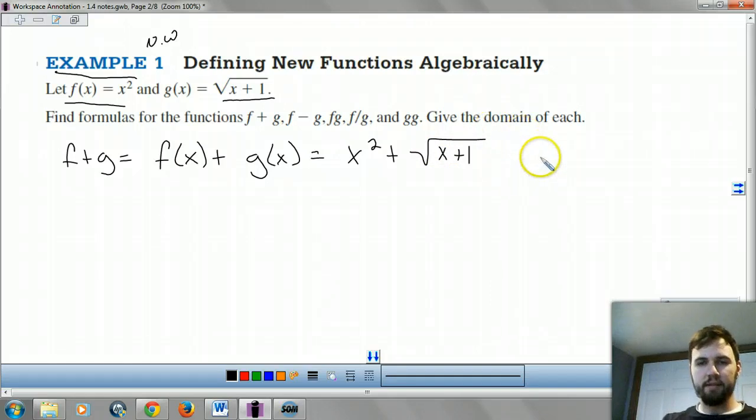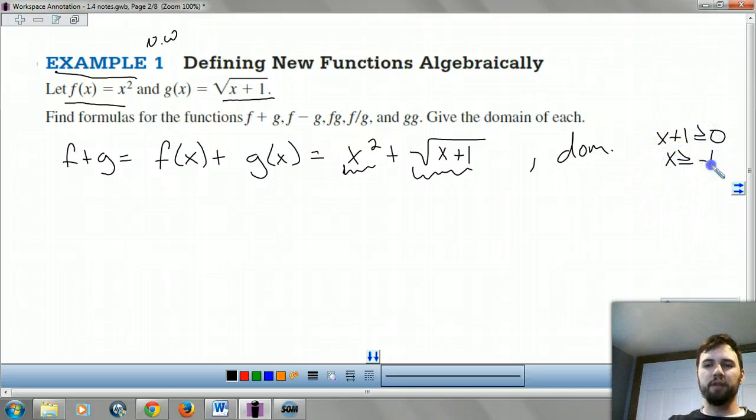Our domain, well, our domain is not restricted on this guy, but it is restricted on this beast. Because we can't get a negative. So we set x plus 1 has to be greater than or equal to 0, x is greater than or equal to negative 1, or in interval notation from negative 1 to infinity.